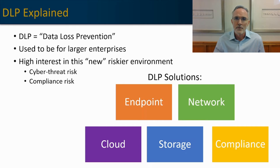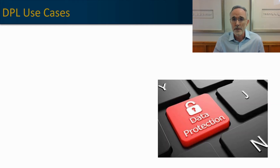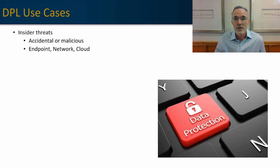These categories are driven by use cases, so let's look at some specific use cases and identify which DLP solutions are applicable. The first and most prevalent threat we want to protect against is insider threats. Insider threats can be accidental or malicious, and 50% of our DLP needs generally comes from protecting against insiders. That will generally involve the endpoint, network, and cloud categories of DLP solutions.